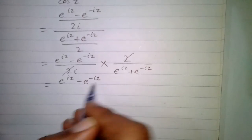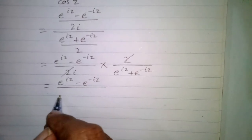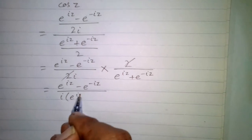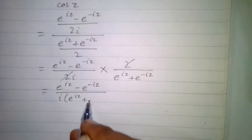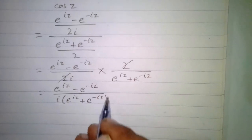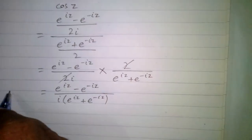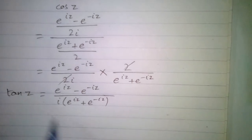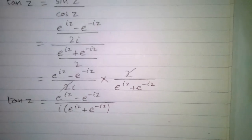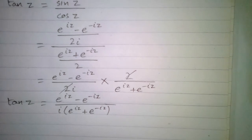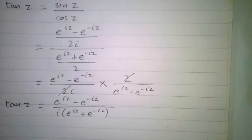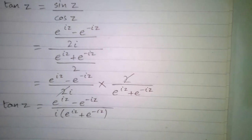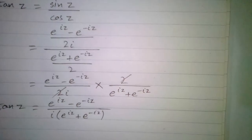So we have e to the power iota z minus e to the power minus iota z upon iota times e to the power iota z plus e to the power minus iota z. Therefore, the tangent of a complex number z is equal to e to the power iota z minus e to the power minus iota z, upon iota times e to the power iota z plus e to the power minus iota z.